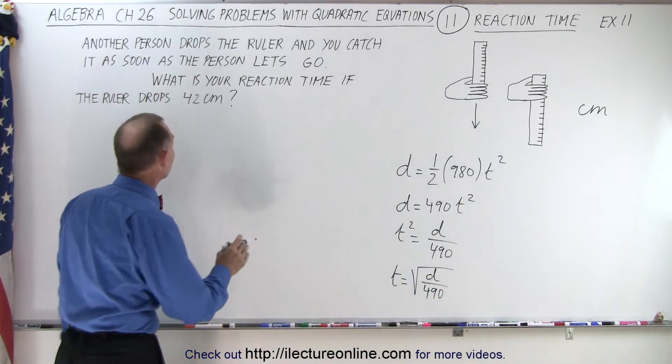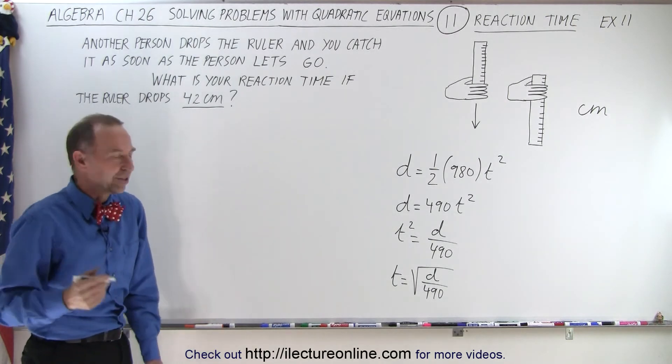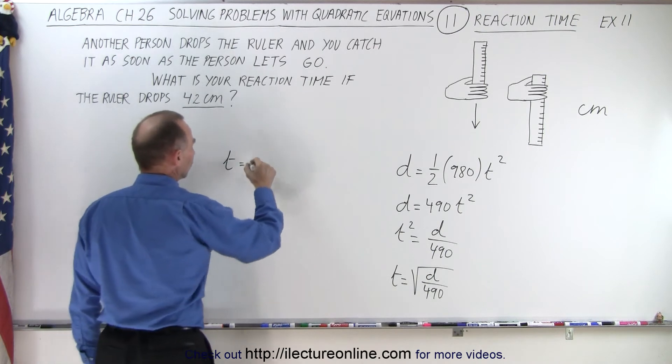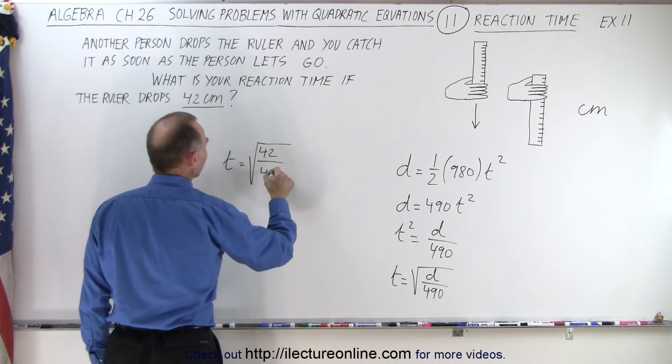And let's say in our particular experiment, the ruler drops 42 centimeters. So what was the reaction time in this case? So you can say that T is equal to the square root of 42 divided by 490.